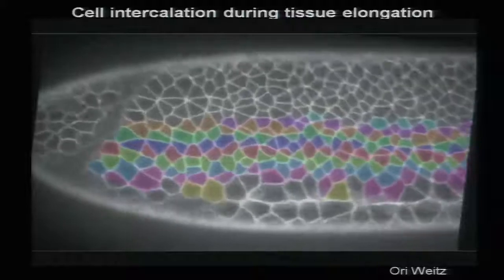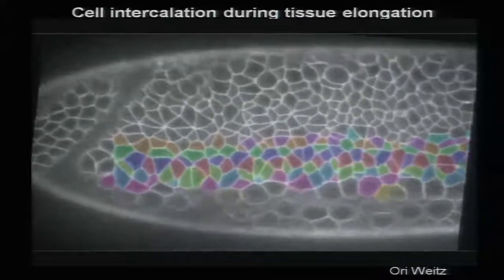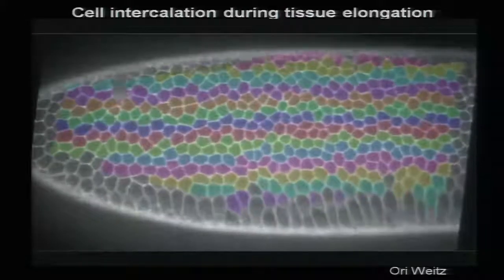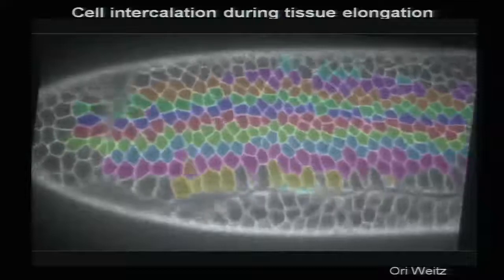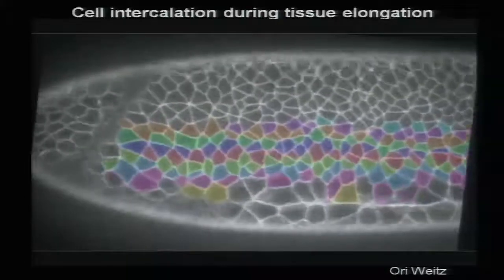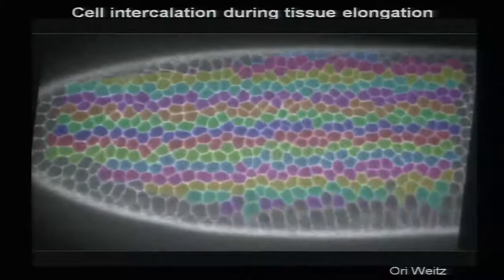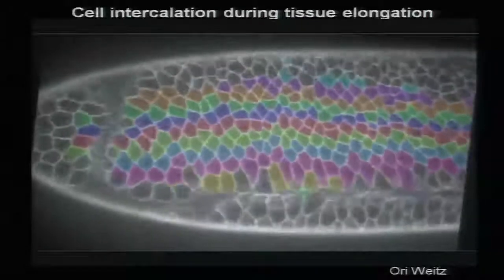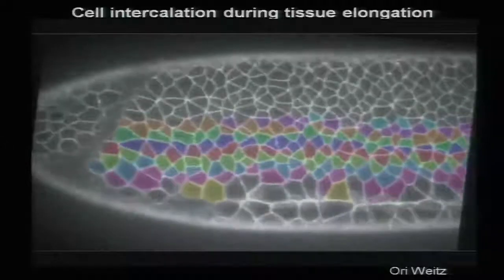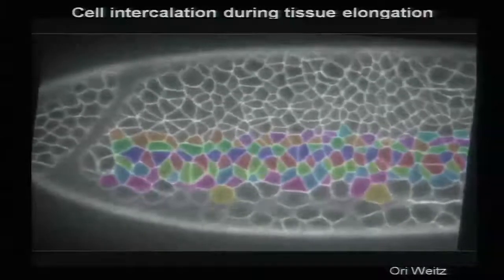We've known for a while that this is driven by something called cell intercalation. We've false-colored rows of cells that start off touching each other along the anterior-posterior axis. As the movie plays, you see cells from a row above or below beginning to intercalate — or interpose themselves — between two cells that started off next to each other, separating them. That makes each individual row longer as the new cell moves in, and at the tissue level it crunches things down in one dimension and makes it longer in the other.